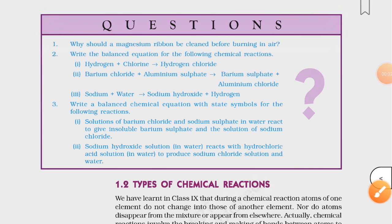Students, today we will discuss in-text problems. First, why should a magnesium ribbon be cleaned before burning in air? You must remember that magnesium, which is a reactive metal, reacts with atmospheric nitrogen gas to form a layer of magnesium nitride over it. Because of this layer, magnesium doesn't burn properly, so it is necessary to remove this layer. It is cleaned before burning in air.